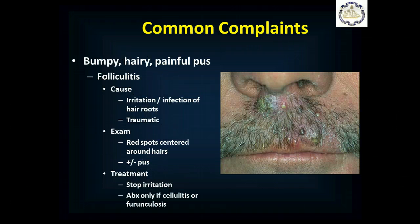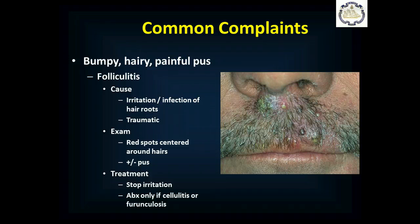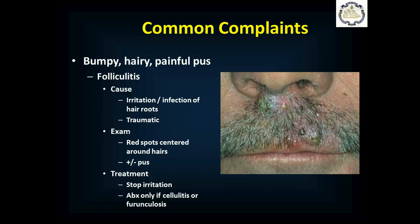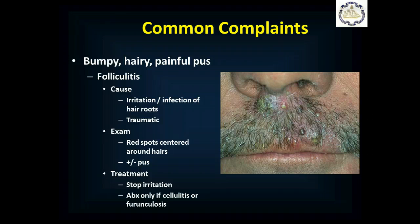People will get bumpy, painful pus pockets — folliculitis — which is irritation and infection at the hair roots, often caused by shaving or other traumatic causes. You'll see red spots centered around the hairs, and you can see some of those on this mustache along with areas of pus. Your treatment is to stop the irritation. If you've got a large surrounding area of cellulitis — the red, hot, tender, swollen area — then you may need antibiotics. And if they have an abscess, antibiotics may also be needed.